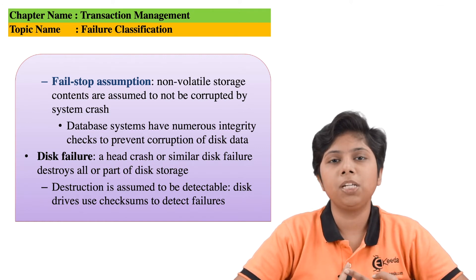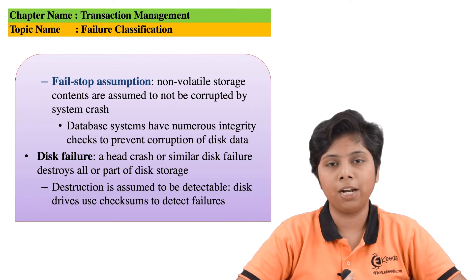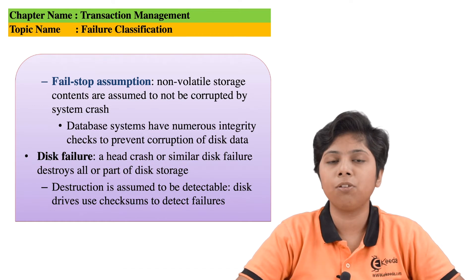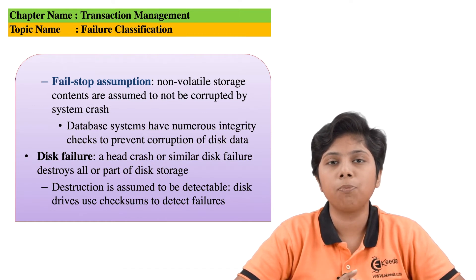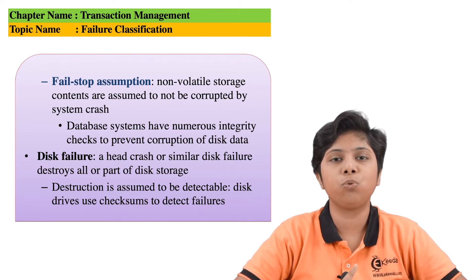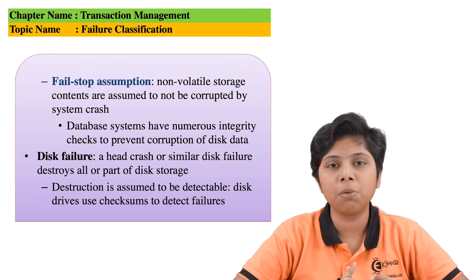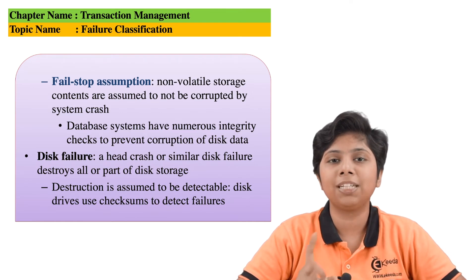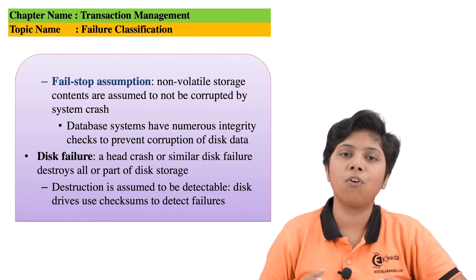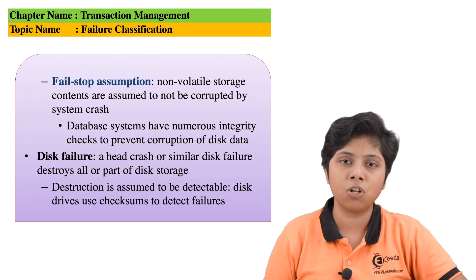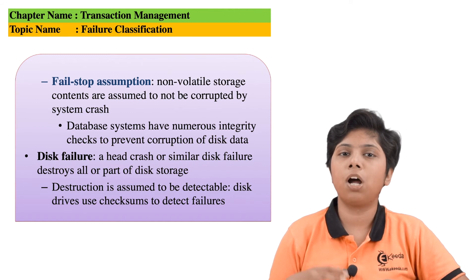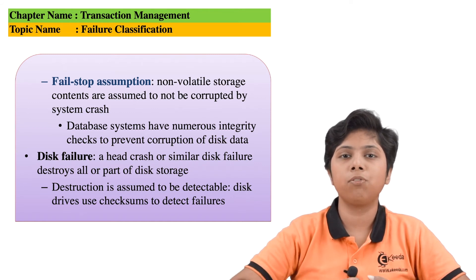To recover from a particular failure, we first need to know the types of failure — that is, the classification — so we can better target that specific problem rather than searching everywhere. If it is a logical error, we redefine the transaction. If it is a system error, we go for deadlock prevention or deadlock avoidance. If it is a system crash, we solve the hardware or software bug. If it is a disk error, we copy the data to another disk in redundant storage.